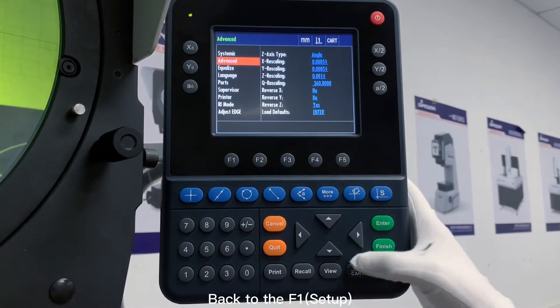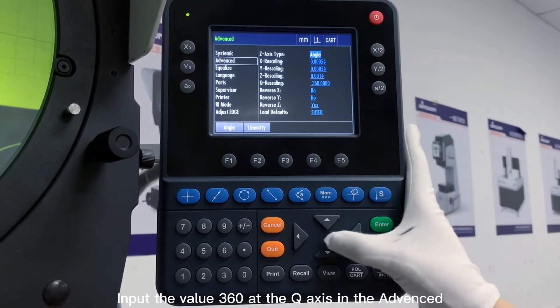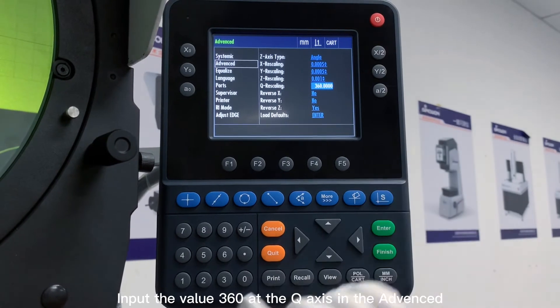Back to the F1 Setup, input the value 360 at the Q axis in the advanced.